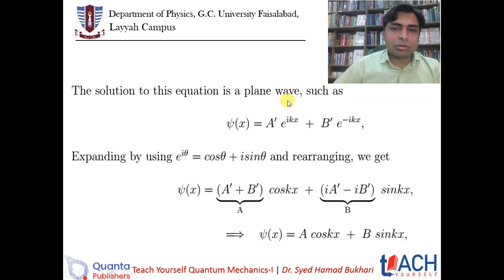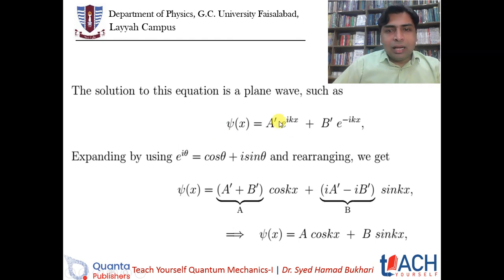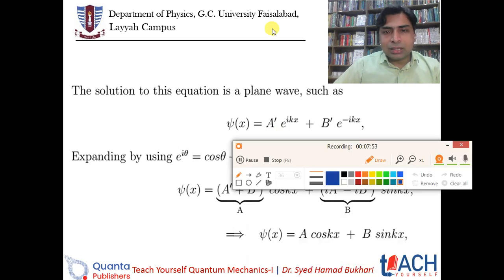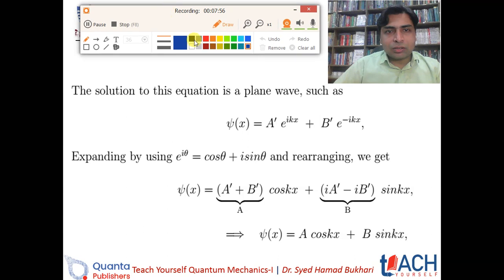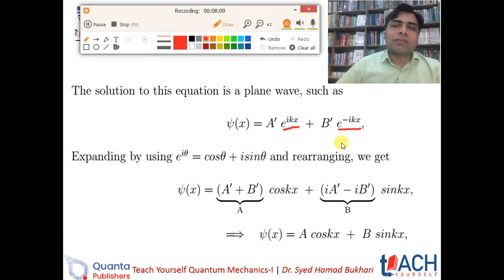For this equation we must have a plane wave solution. The general solution is: ψ = A' e^(iκx) + B' e^(−iκx). The term e^(iκx) represents the particle moving towards the right — along the positive x direction — and the term e^(−iκx) represents the particle moving in the negative x direction, i.e., the reflected particle.